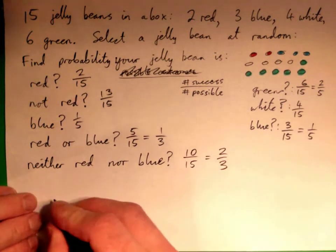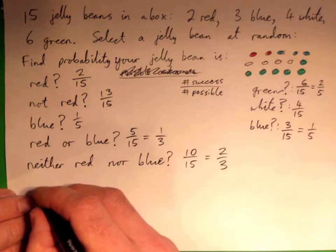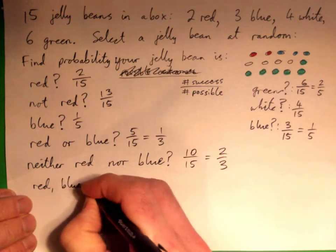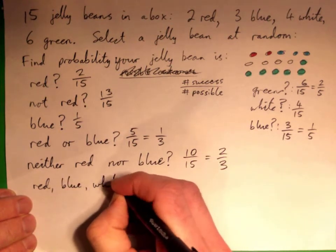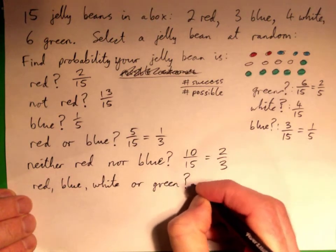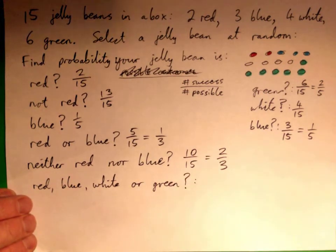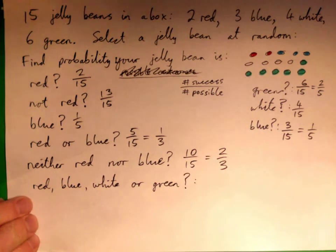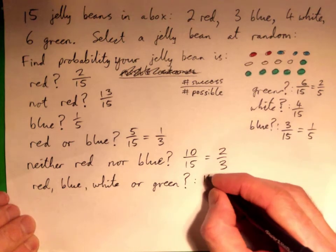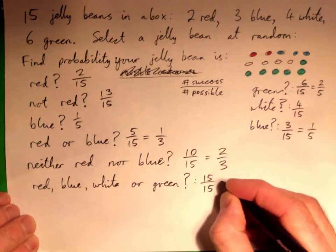Okay, I'm going to give you, what's the probability it is red, blue, white, or green? Just for fun. Fifteen out of fifteen, good. And simplify that. One.